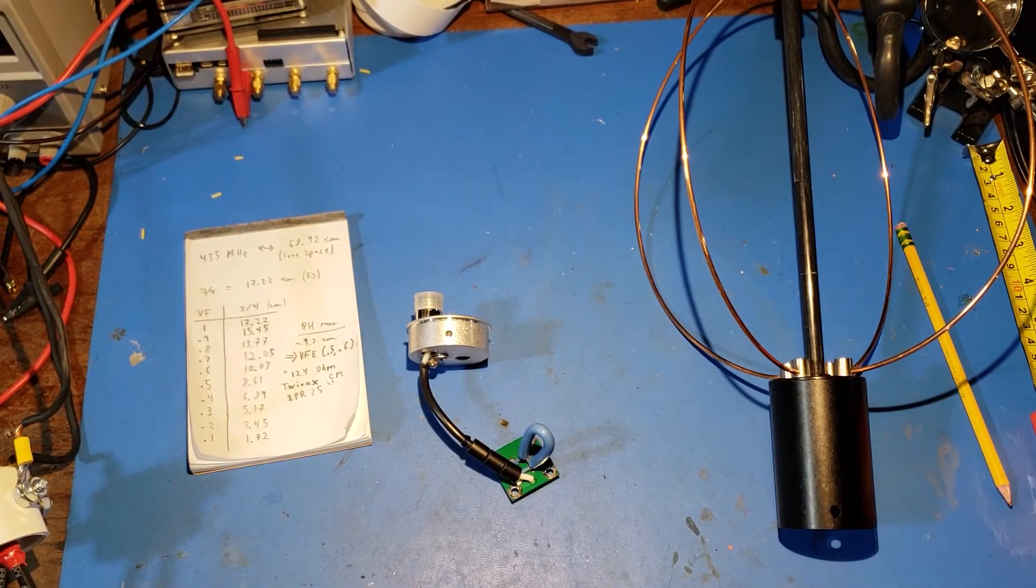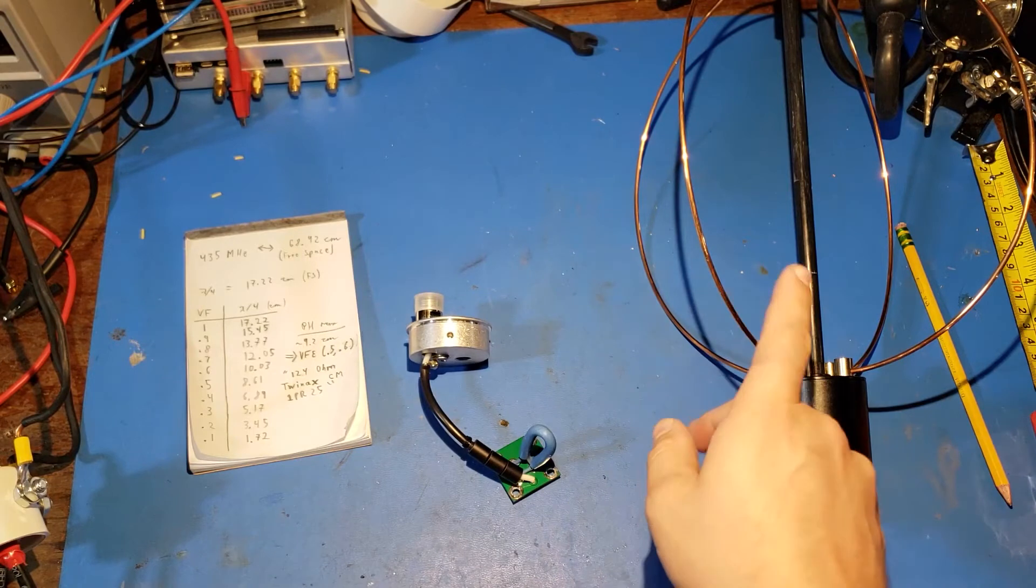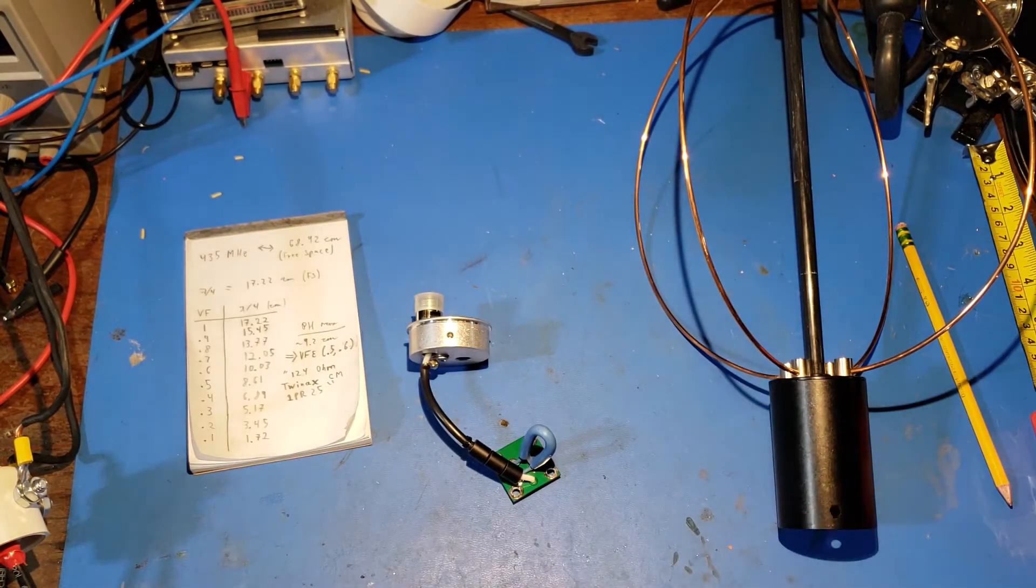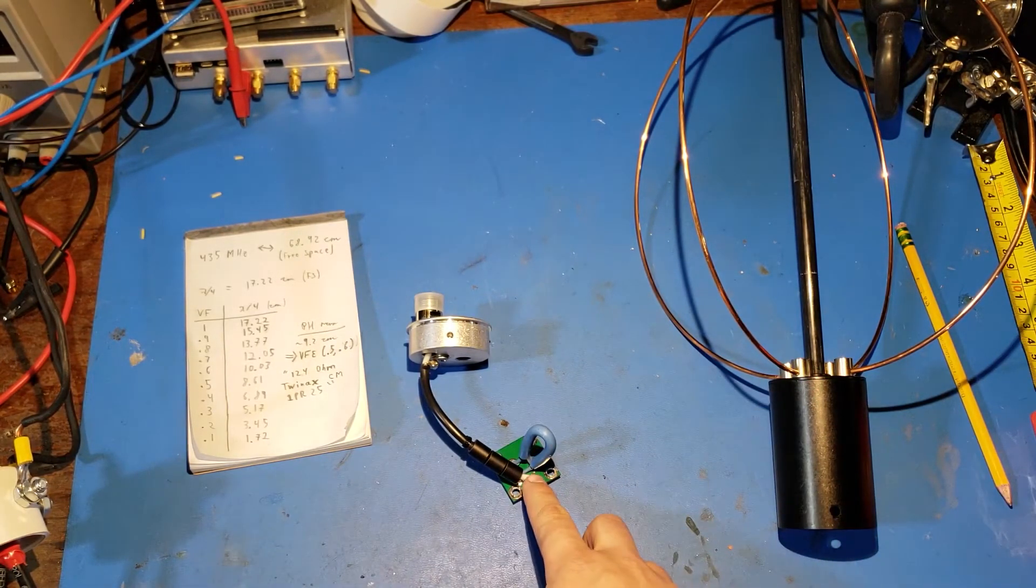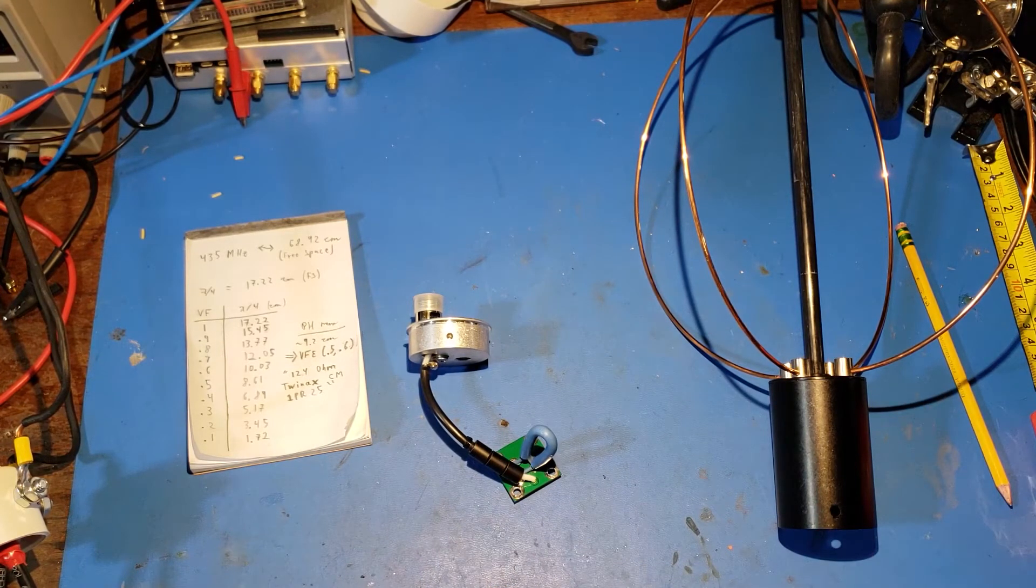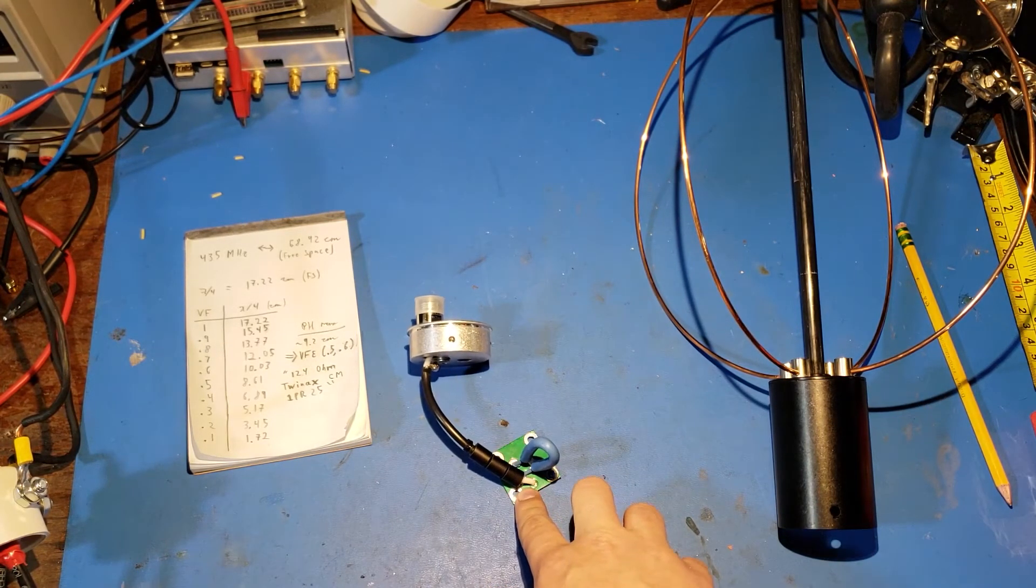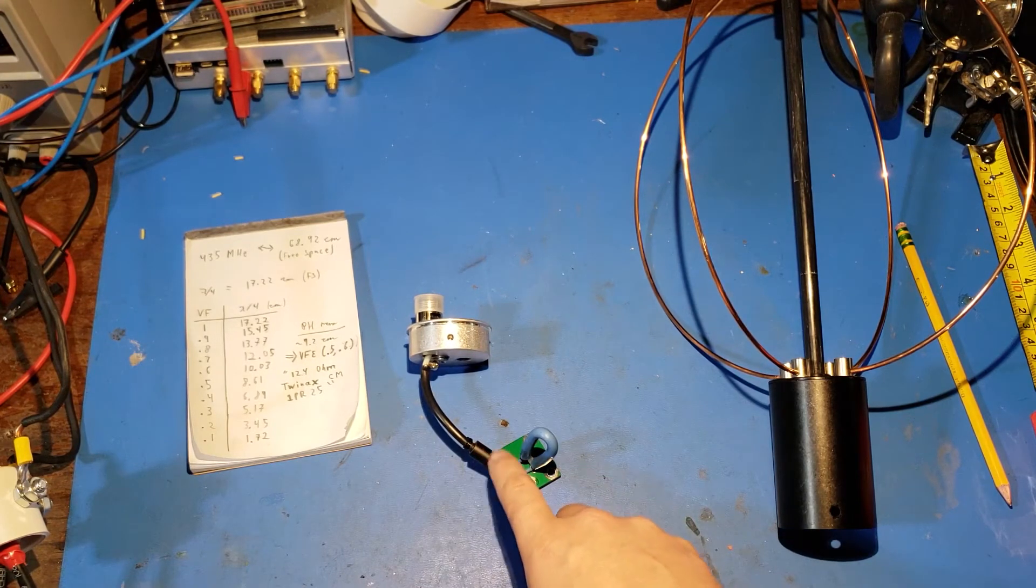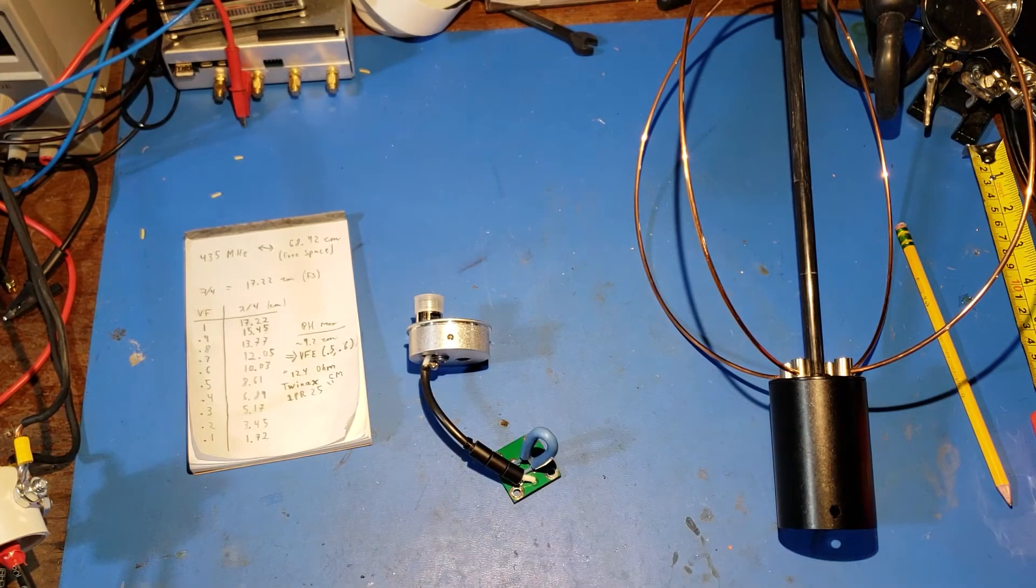But either way, they're still achieving the goal of having the characteristic impedance of the cable be close to the input impedance of the loop so there's minimal transformation as you move along this transmission line to be placed in parallel with the other loop. And then you connect to the feed point coax, and in this case they have the integrated balun, and out to the connector.